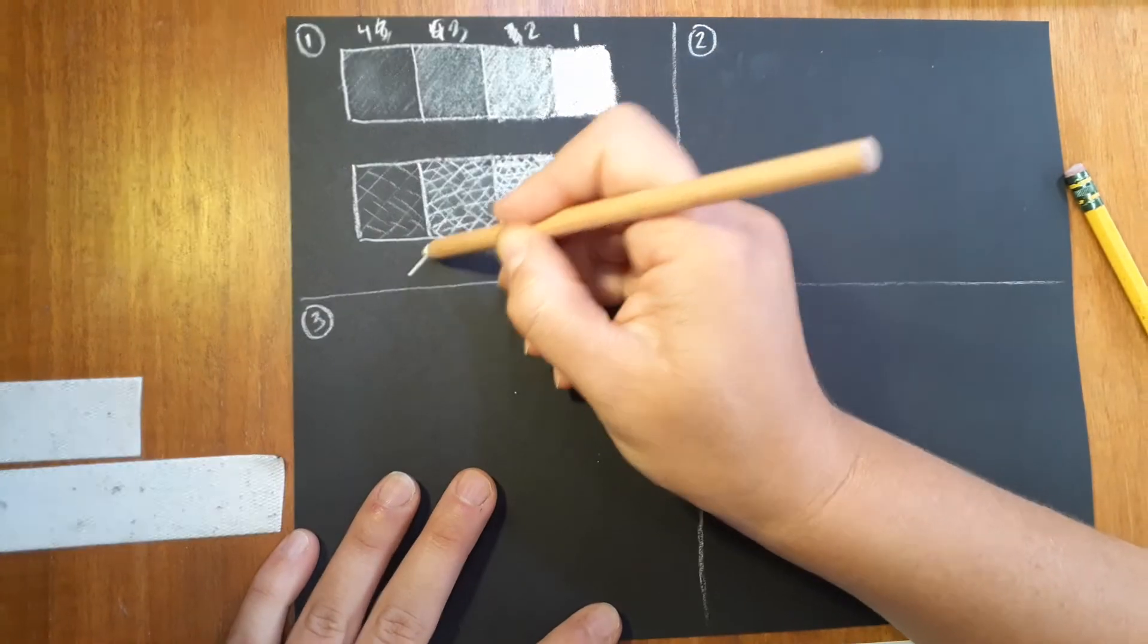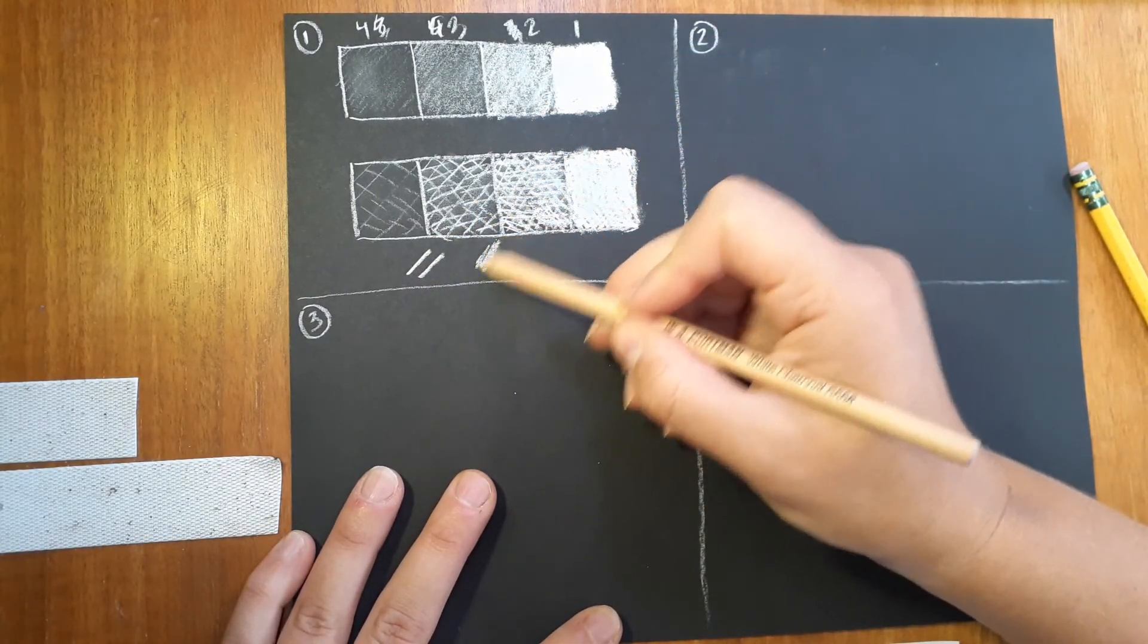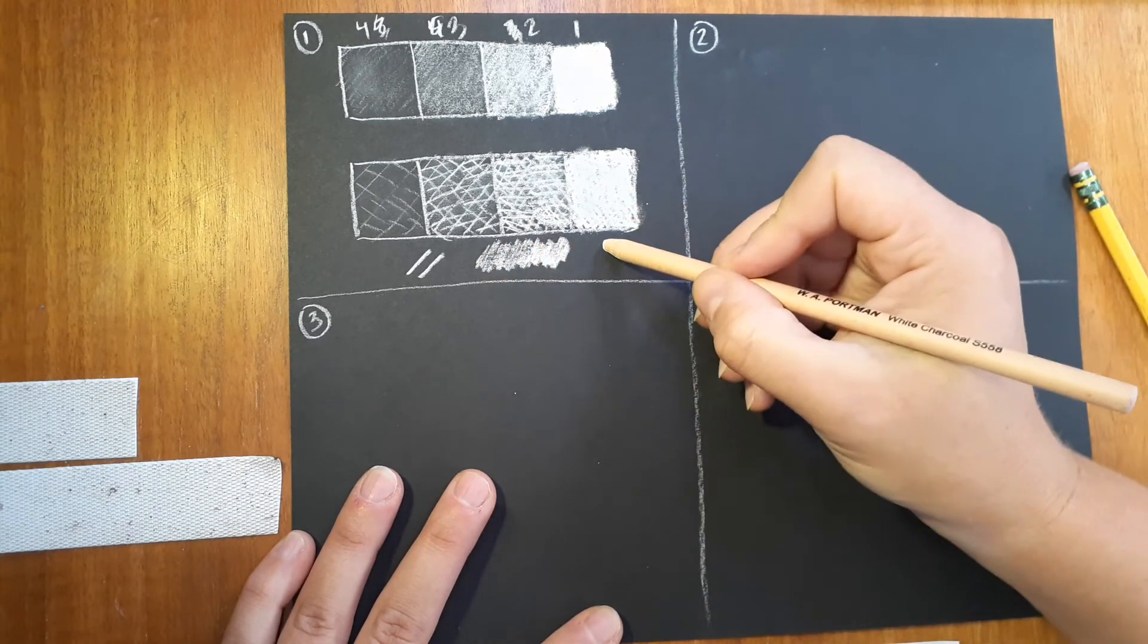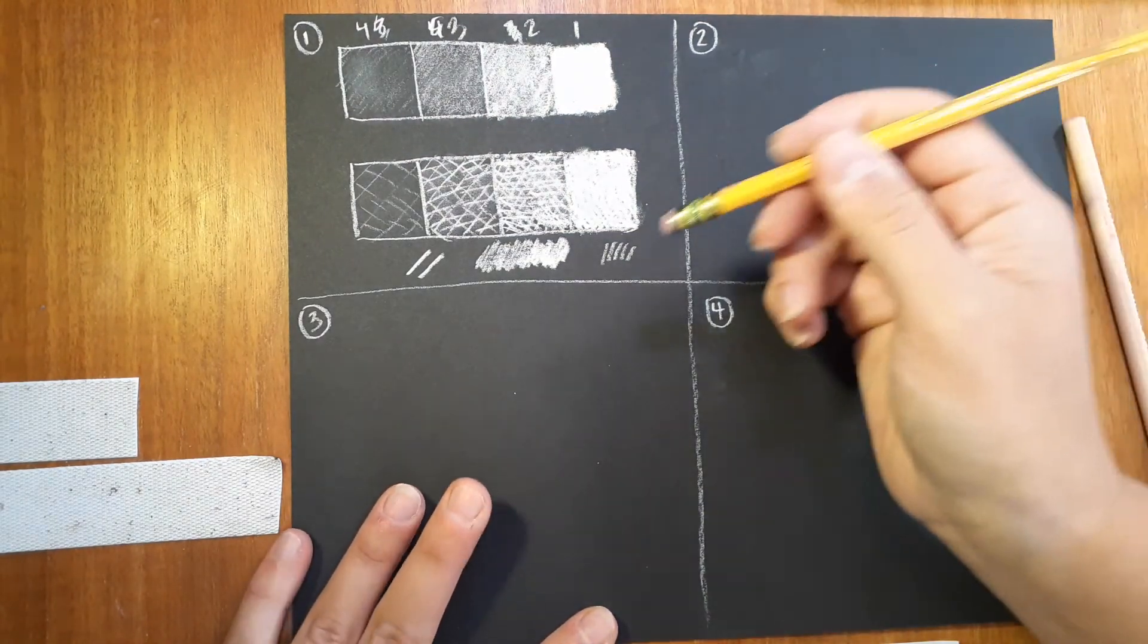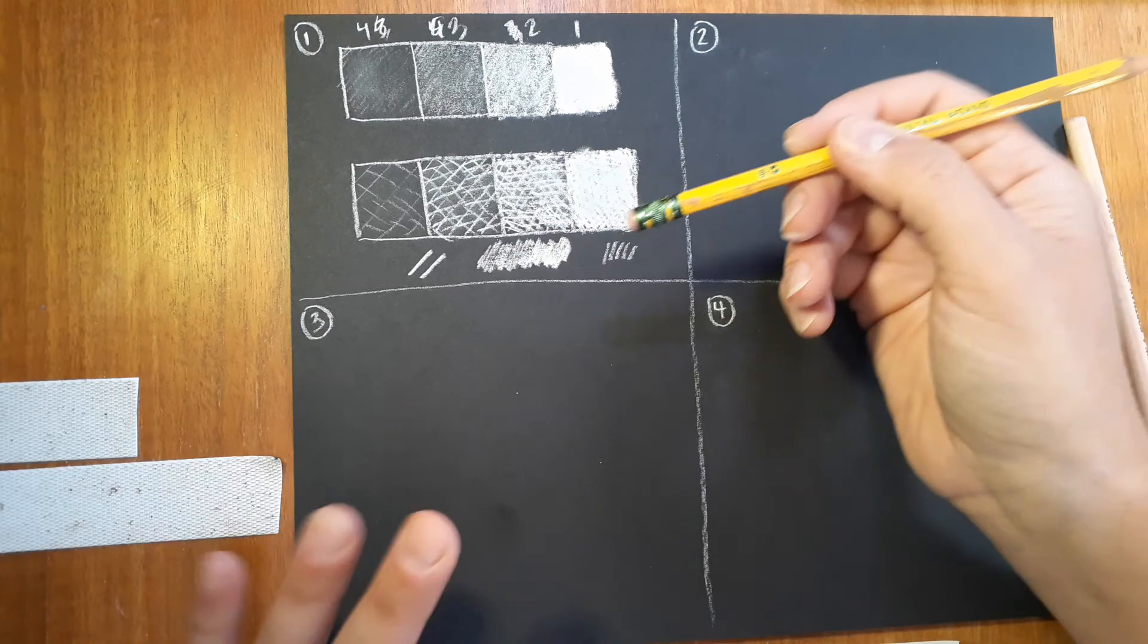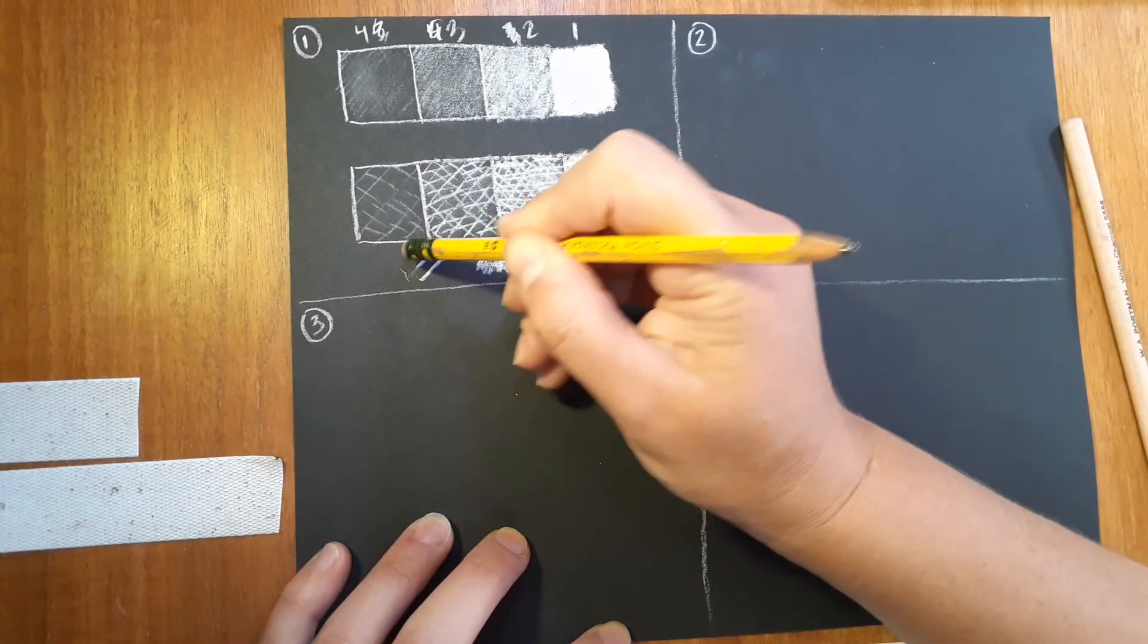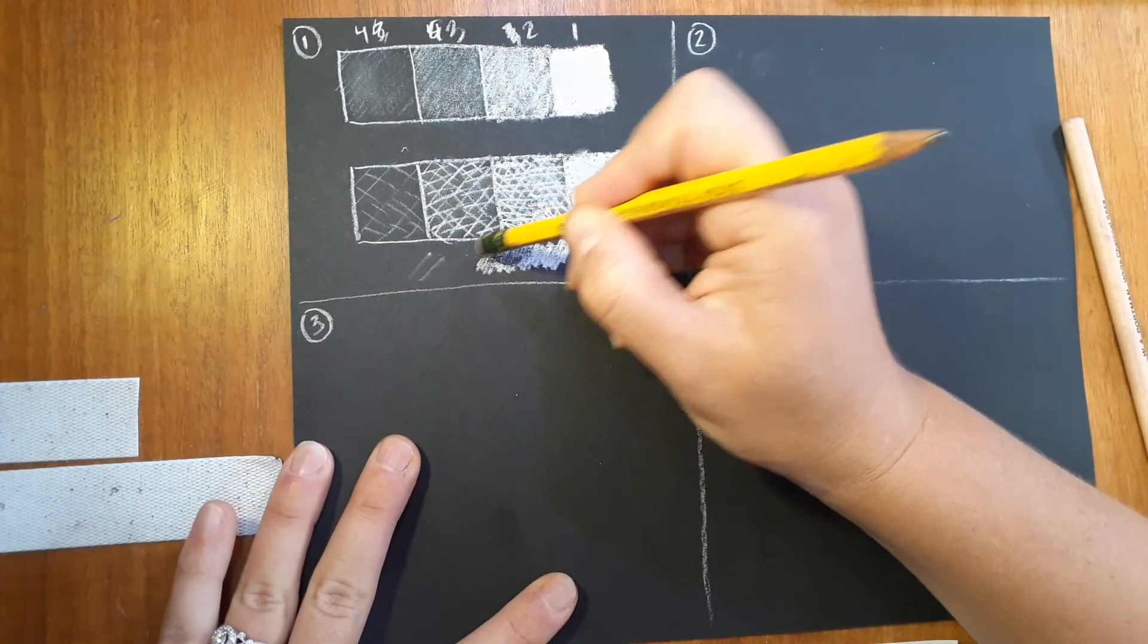I want you to just make like a couple marks, do some really hard marks, maybe do a little bit of a blend, and then do a couple little softer marks. And then I want you to use your eraser and I want you to see, can you erase these marks? What happens when you erase them? Do they fully go away, do they not? So kind of experiment a little bit with the eraser.